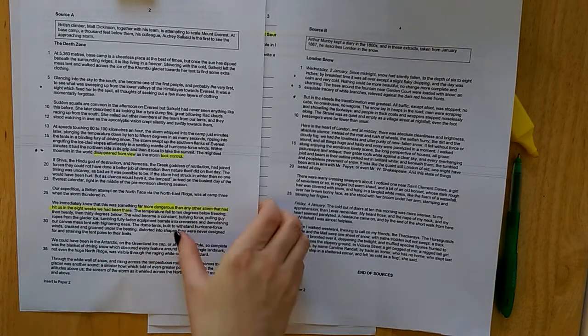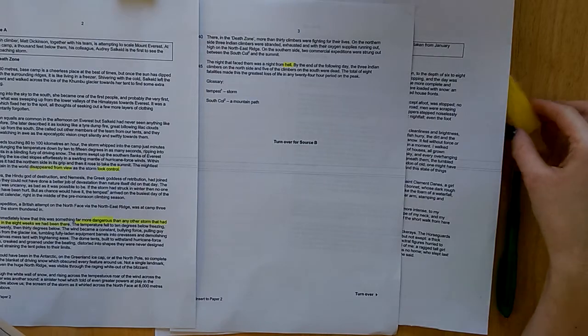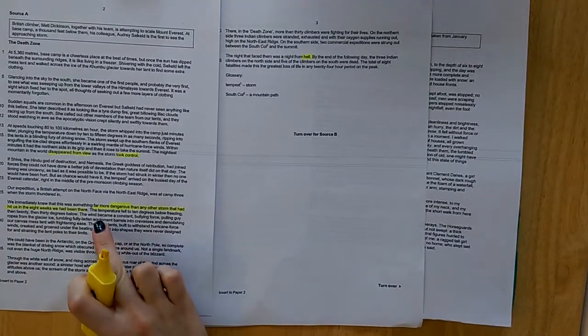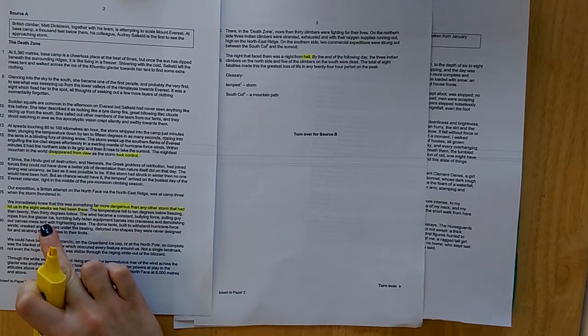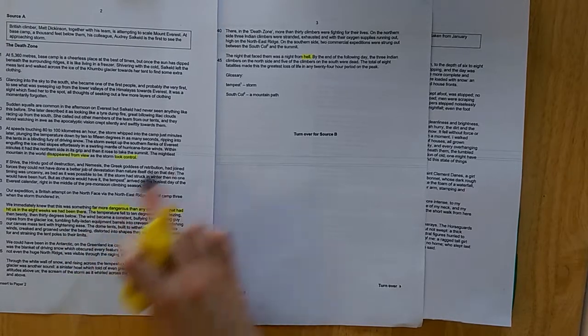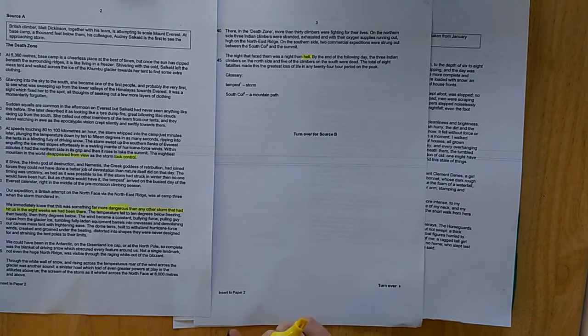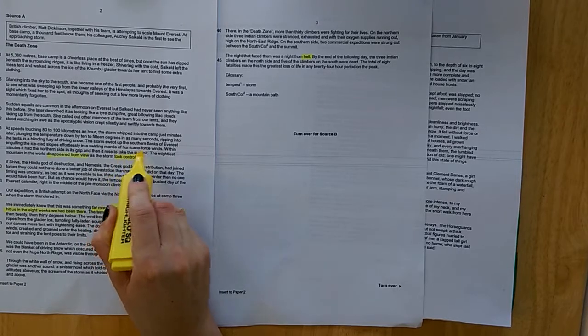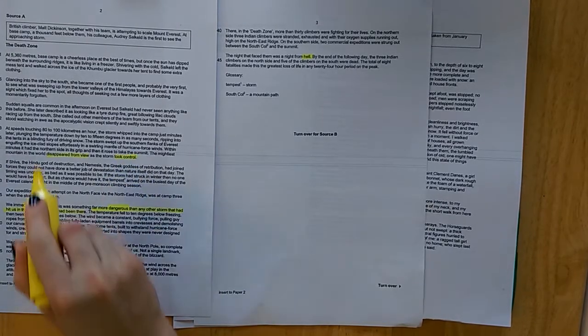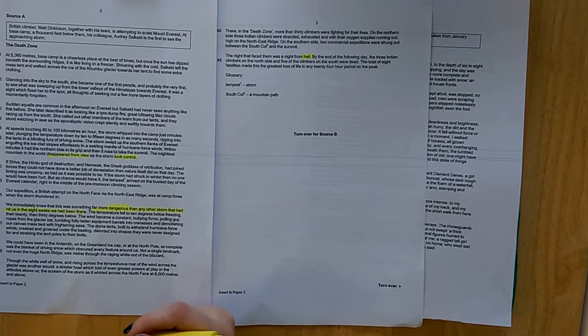When I look back at text A, I can see that the effect of the storm, the effect of the weather, is very dangerous. Here it says that the storm was far more dangerous than any other storm that had hit us, the climbers, in the eight weeks we've been there. It also says that this was a night from hell, which shows that the storm was very dangerous. The storm also took control. And the mountains disappeared from view. The storm here made it very hard to see, made this a very terrifying situation.